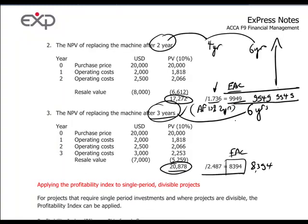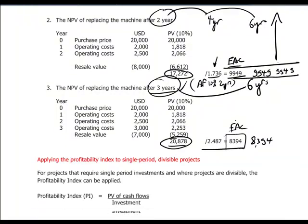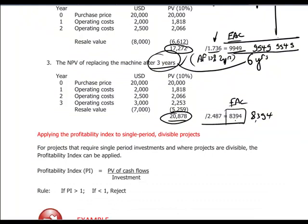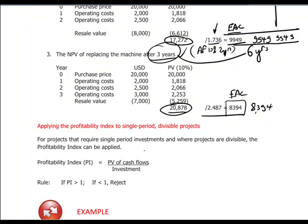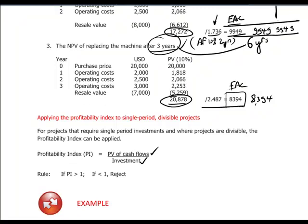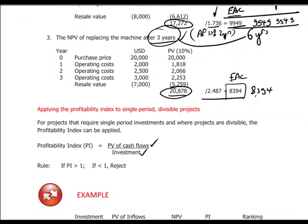The final part of this section covers the profitability index, defined as the present value of a project's cash flows divided by the investment amount. The rule is: if the profitability index is greater than 1 — i.e., NPV is greater than zero — accept the project; if the profitability index is less than 1, reject the project.